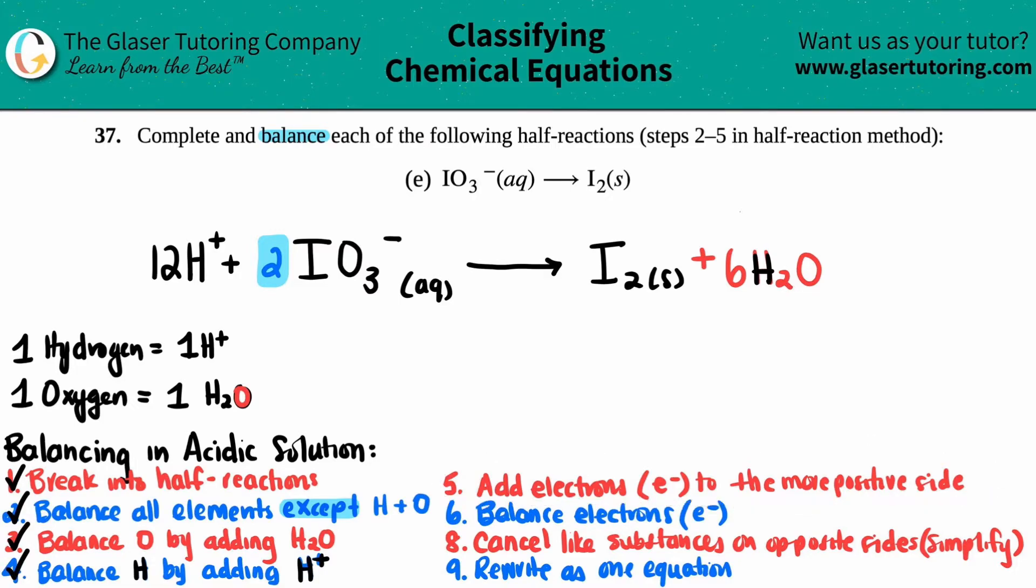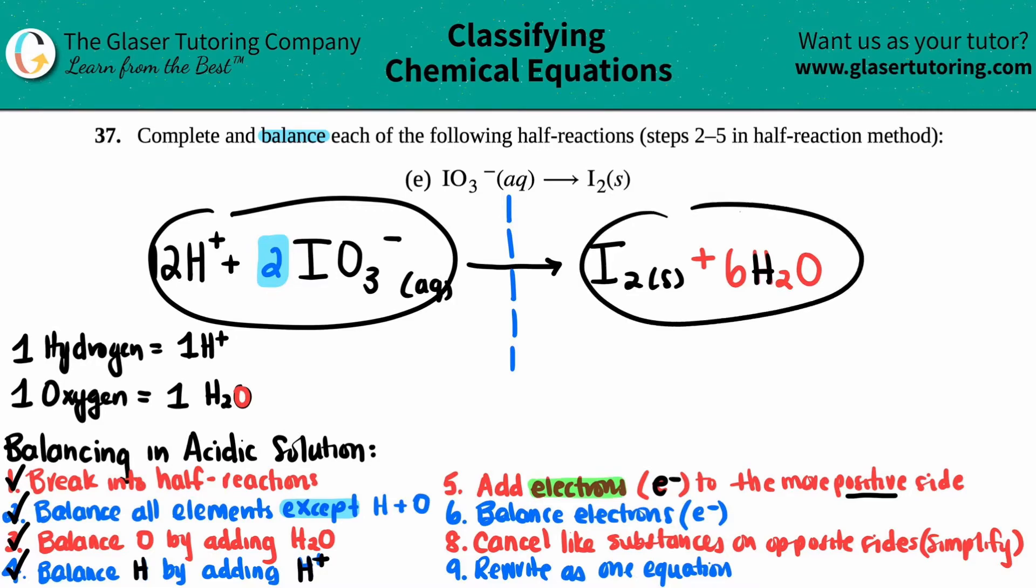Now we come down to the last step. We have to add electrons. And electrons are E negative. Electrons are negative, so you need to include that negative sign. And you're always going to add electrons to the more positive side, bringing it down to the negative side or the more negative side. Now, what I like to do at this stage is I like to make a barrier between the left and the right side. I'm going to total up the total charge on the left side and the total charge on the right side.